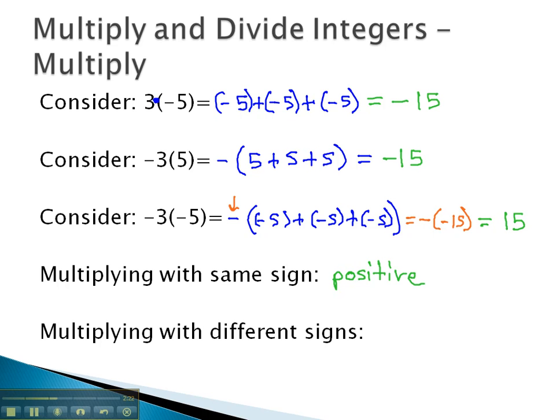When multiplying with different signs, and it didn't matter which one was negative or positive, a positive times a negative was negative, and a negative times a positive was negative as well. In other words, if the signs don't match, the answer is negative.